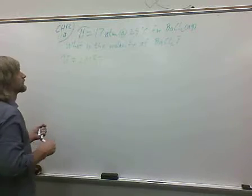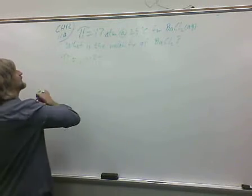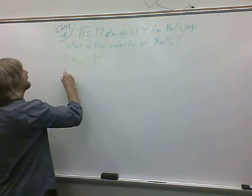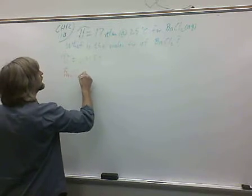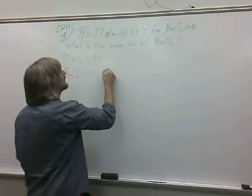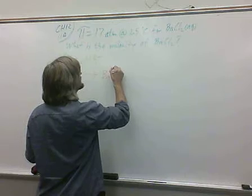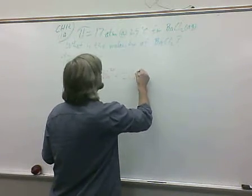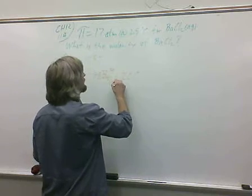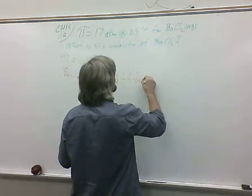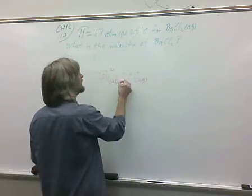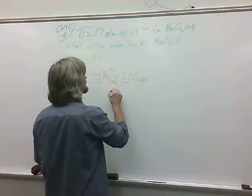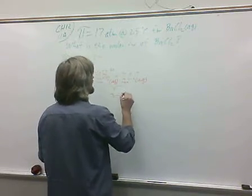We need to know the Van't Hoff factor for barium chloride. It dissolves in water, forms barium ions and 2 chloride ions. So we add these two coefficients together, and that is our Van't Hoff factor.